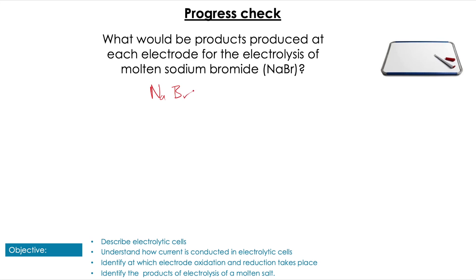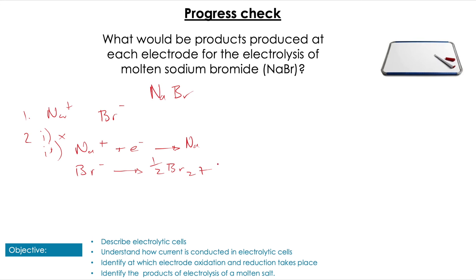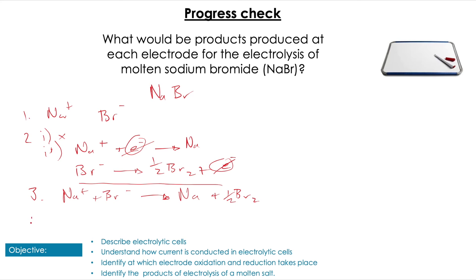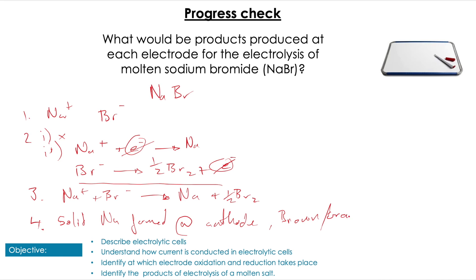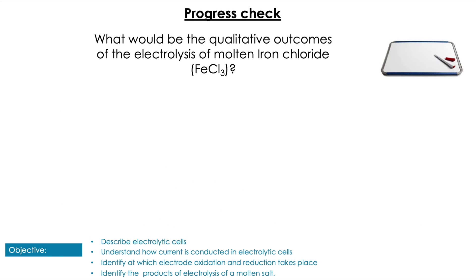For molten NaBr: we have Na⁺ and Br⁻ — no other ions present. At the cathode: Na⁺ + e⁻ → Na. At the anode: Br⁻ → ½Br₂ + e⁻. The electrons already balance so we can write the overall redox equation. Qualitative observations: at the cathode we see solid sodium — a silver solid. At the anode we see bromine — a brown/orange gas produced.